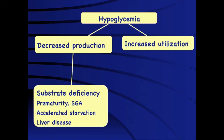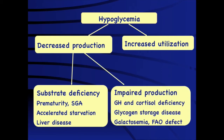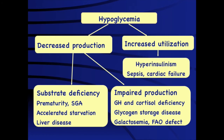Decreased production can also occur where the substrate is present but hormones to metabolize it are lacking — typically in growth hormone or cortisol deficiency — or the enzymes responsible for conversion are not working, as in glycogen storage disease, galactosemia, and fatty acid oxidation defects. Increased utilization most commonly occurs because of hyperinsulinism but can also occur in the setting of sepsis or cardiac failure.